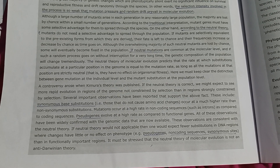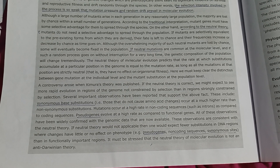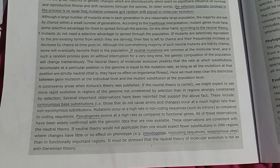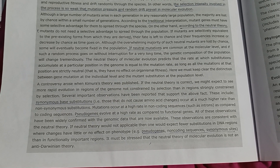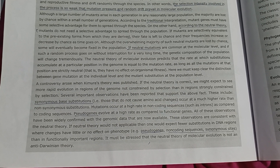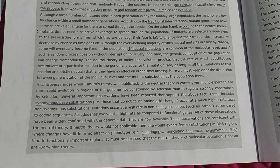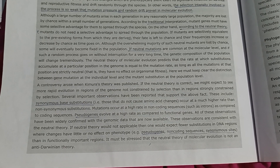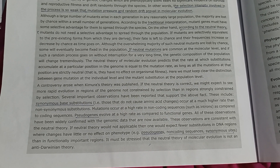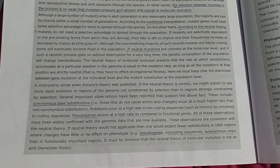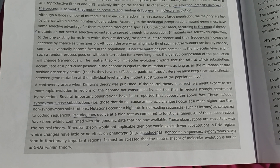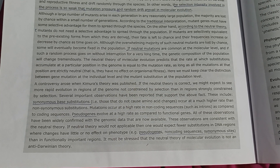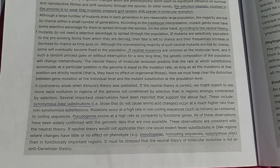There is also controversy regarding this theory. Synonymous base substitutions occur at a much higher rate than non-synonymous substitutions. Pseudogenes evolve at a higher rate compared to functional genes. Some examples include pseudogenes, non-coding sequences, and synonymous sites.